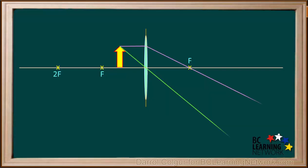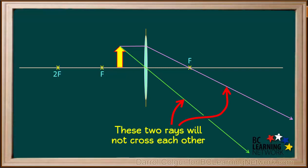Notice that in this case, these two rays are moving away from each other or diverging. They will not cross each other. Therefore, no real image can be formed in this case.